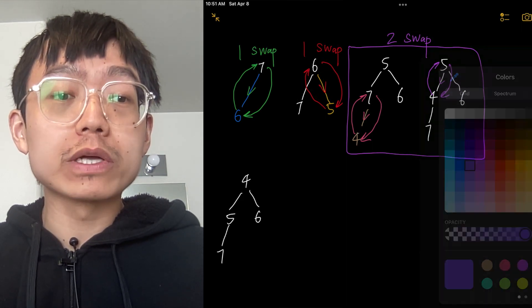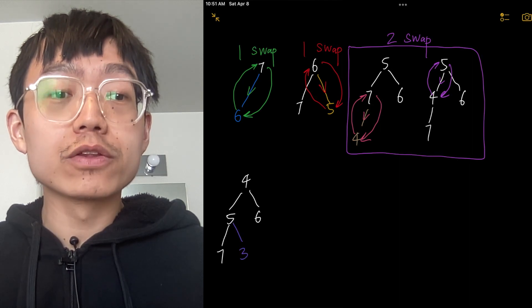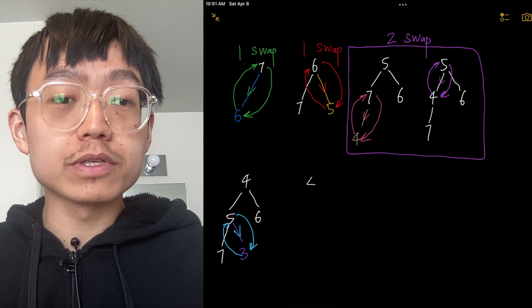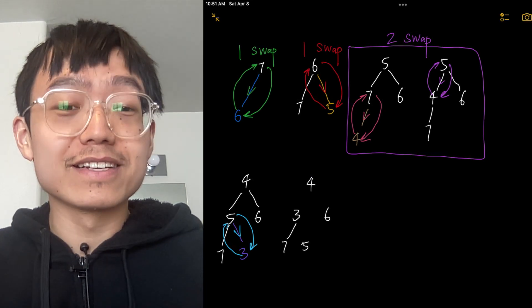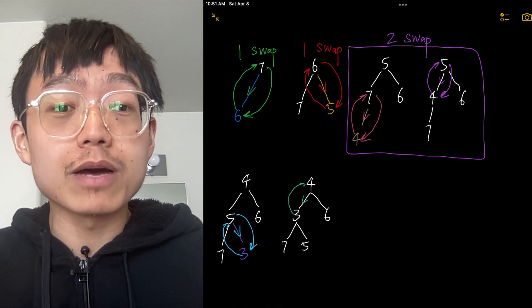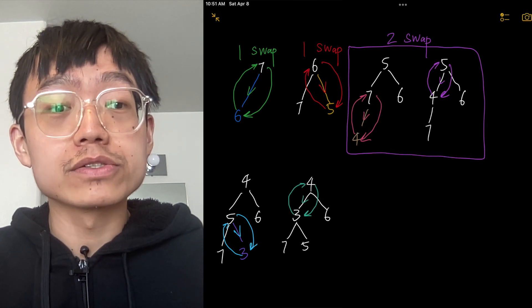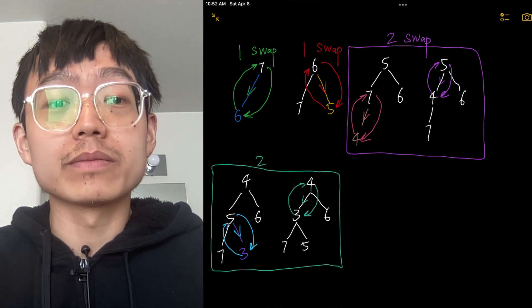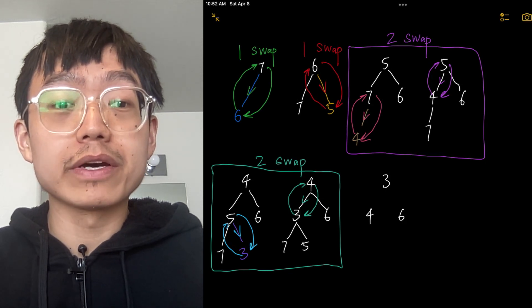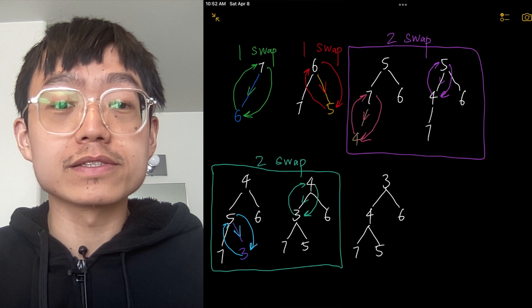And if now we want to insert element 3, 3 is less than its parent node 5, so we have to swap node 3 with node 5. But 3 is also less than 4, so we swap again. In total, we swap element 3 two times. So finally we get the minimal heap 3, 4, 6, 7, 5.